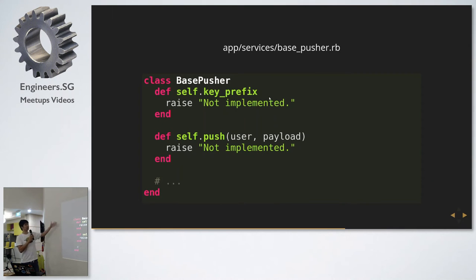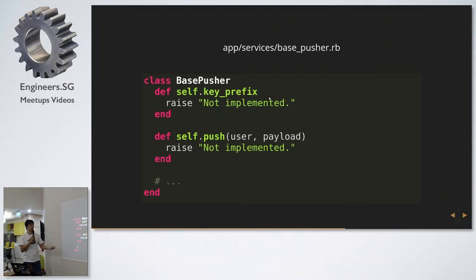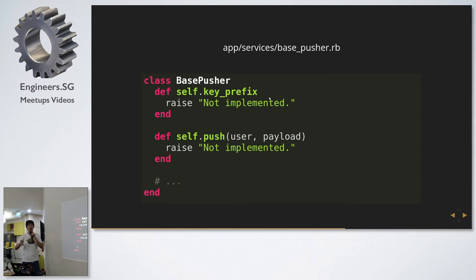I started by implementing a base pusher — basically a factory pattern. You expect certain behavior from objects that inherit from this class. The first is a key prefix to identify whether it's a Google Cloud Messaging pusher or a Mozilla pusher. Then there's the push method — both handle it similarly, but later I'll touch on why the push method has to be different.